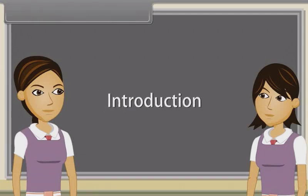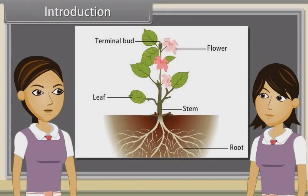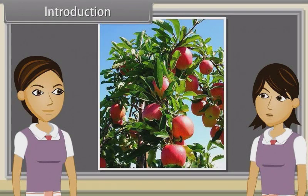When we observe a plant, we see that every plant has roots, stem and leaves. Plants also have flowers and fruits. We have already discussed characteristics, types, modifications and functions of roots and stems. Now we will study the leaf.